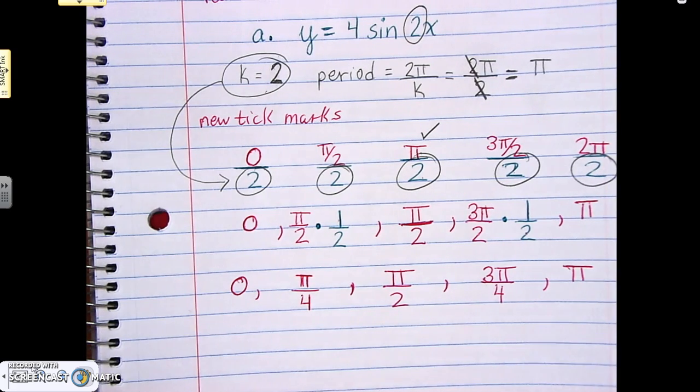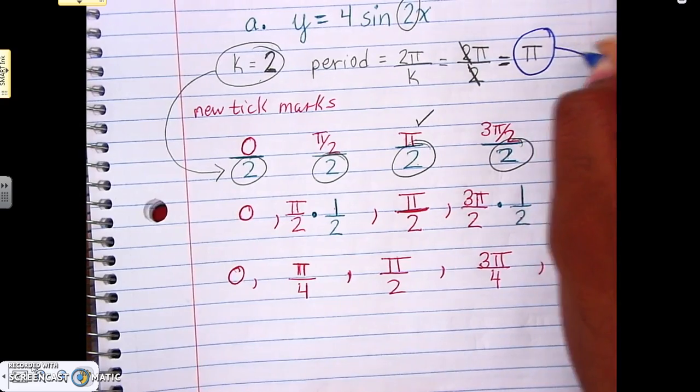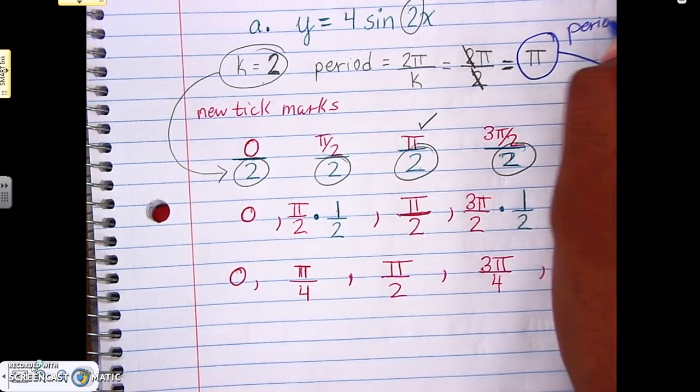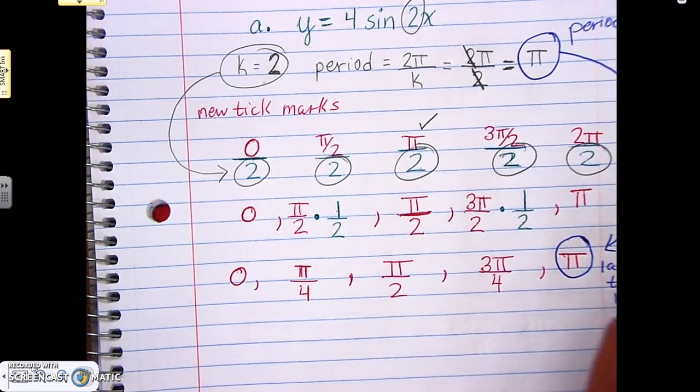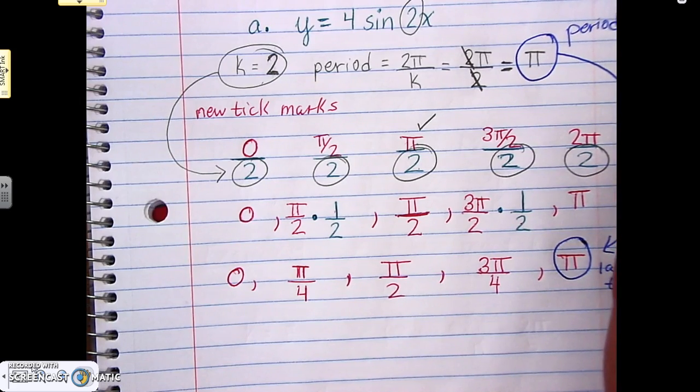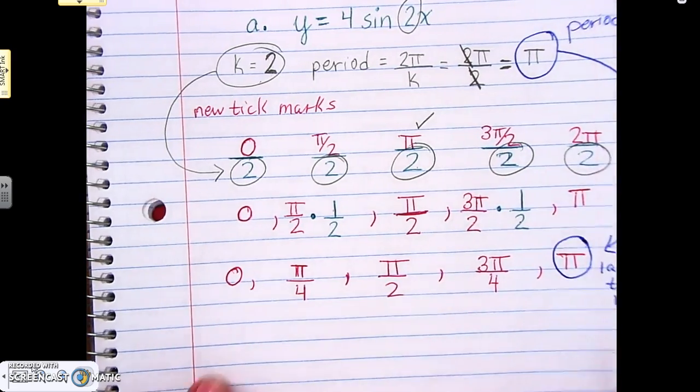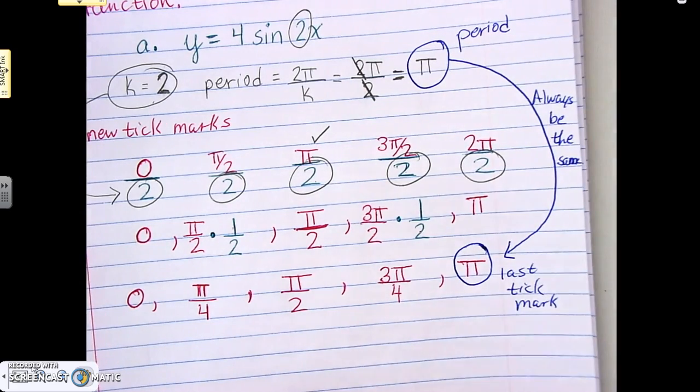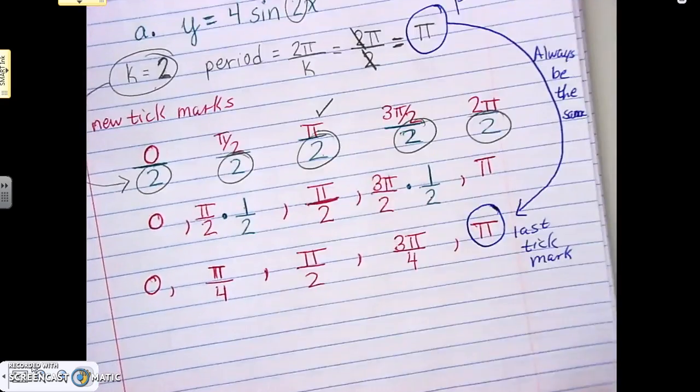But also before we do any type of graphing, because I didn't point this out in the last video. But if you look at it, this will happen every time. Whatever your period is, that's always going to match up with the last number in your tick marks. So your period here and your last tick mark, they're going to always equal each other, always be the same. So the period and the last tick mark will always be the same thing. If there aren't, that means you did something wrong, and you've got to fix it somehow.